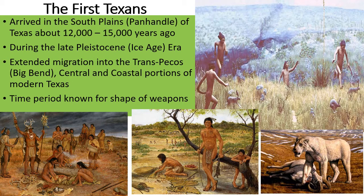Academics have theorized that the first Paleoindians arrived in the South Plains, the Panhandle of Texas, about 12,000 to 15,000 years ago. During the late Pleistocene era, also known as the Ice Age, early humans extended migration into the Trans-Pecos, central, and coastal portions of modern Texas. This cultural time period is historically categorized by the creation and shape of weapons, especially spearheads. Archaeologists would normally name their items after the nearest town where they were found. Examples of this are the Clovis people, named after Clovis, New Mexico, and the Folsom people, named after Folsom, New Mexico, based on the fluted points found there during previous archaeological digs. The Clovis and Folsom peoples are two of the most popular categorizations of Paleoindians used in archaeological discussions.